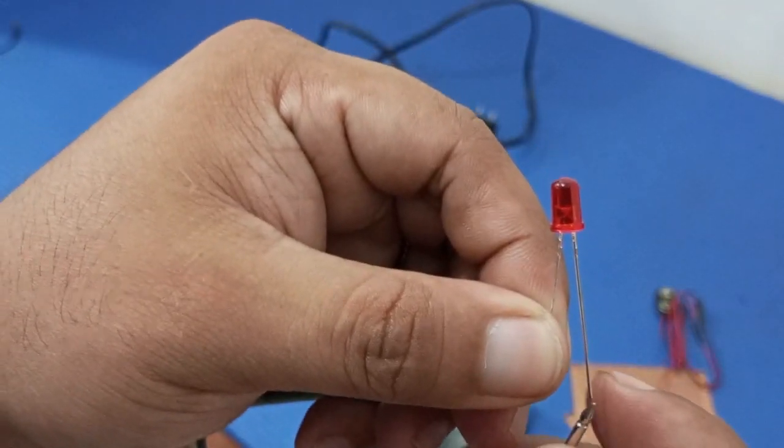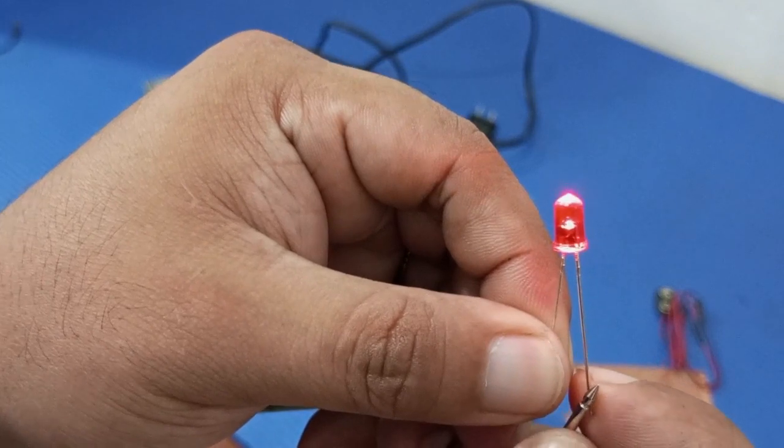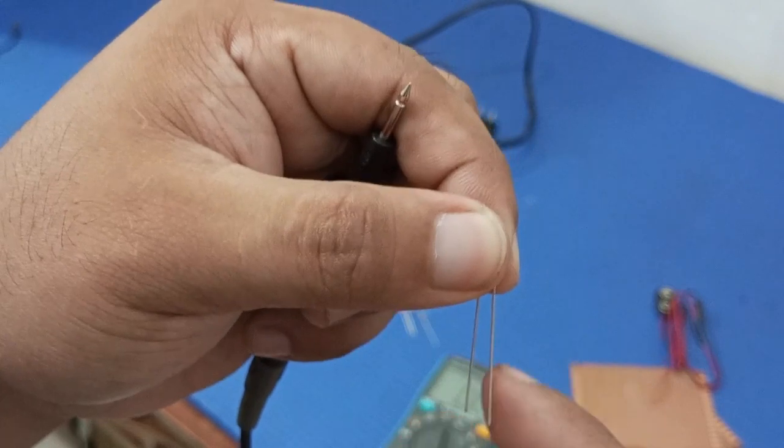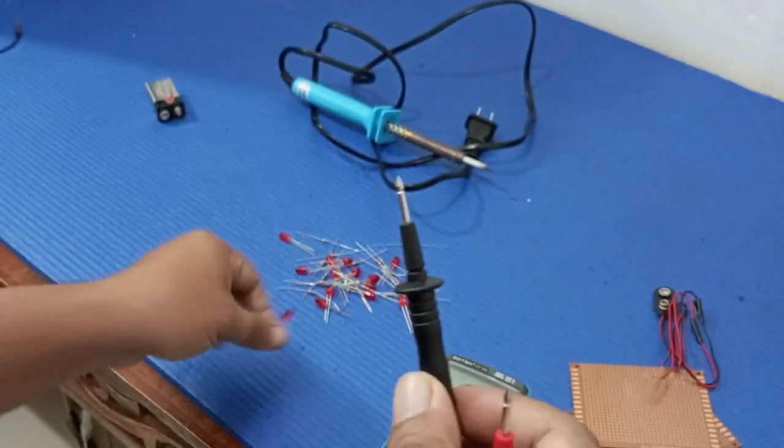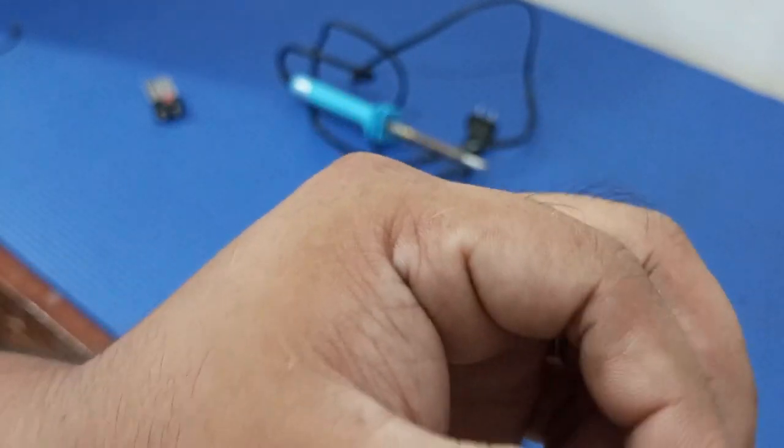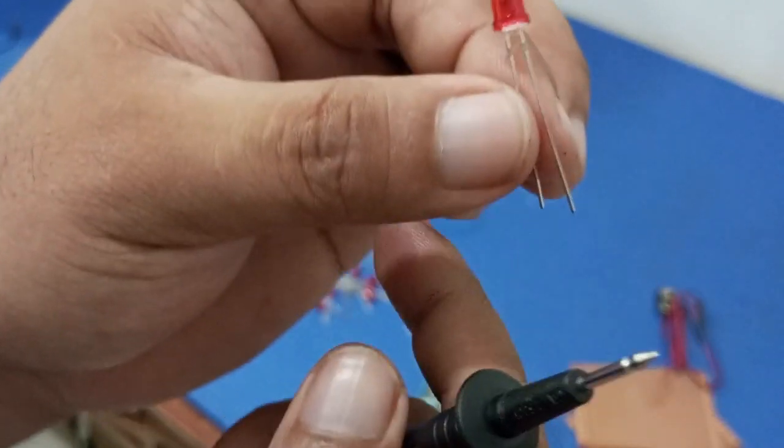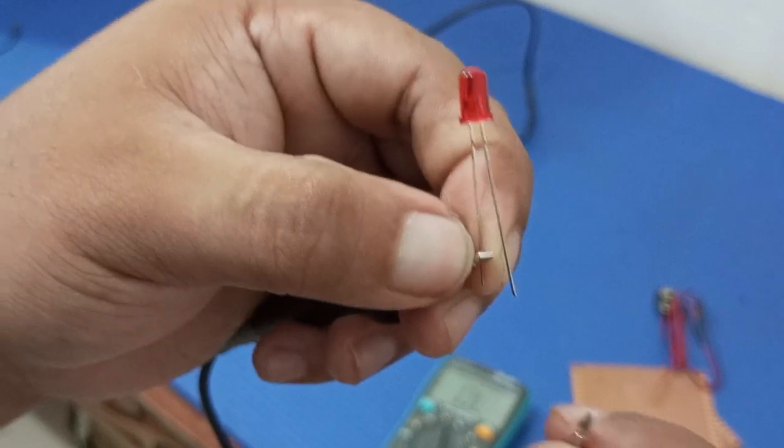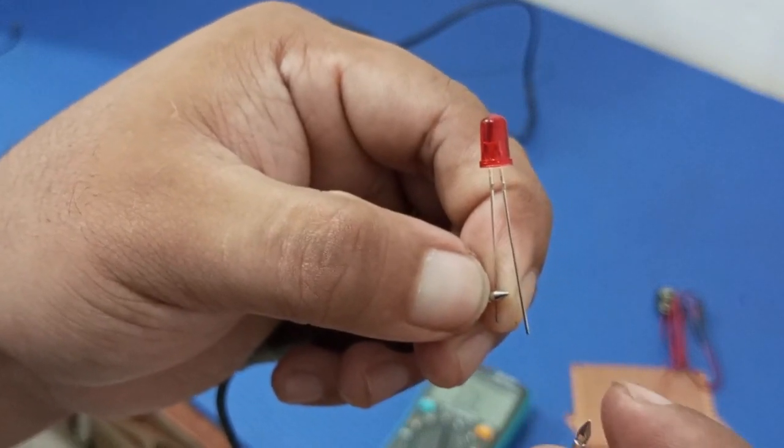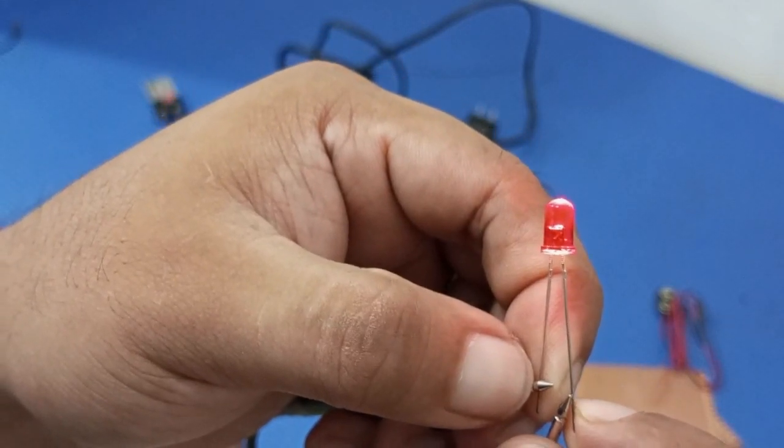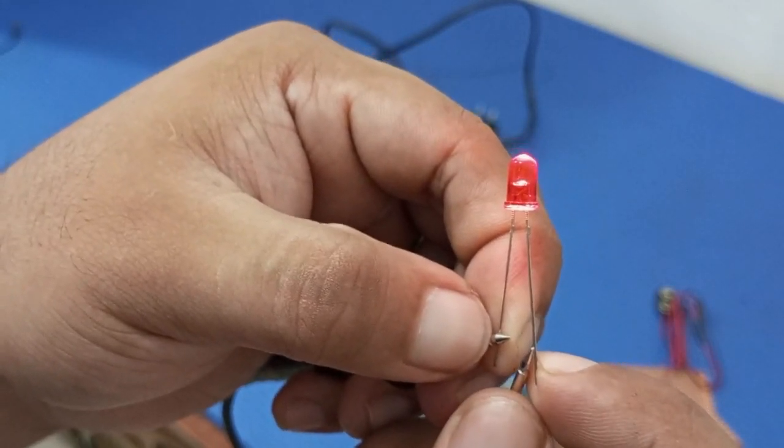The longer one is the positive and the shorter one is the negative. Let's try this one again. It is also a way on how you can test if the LED is still working or not. Sometimes if you troubleshoot a component or electrical apparatus, it's just the LED that burst out. There you go, it's working and that's how an LED works.